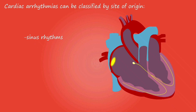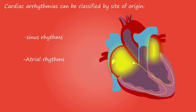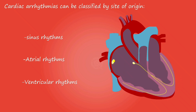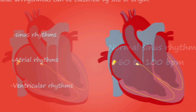A normal sinus rhythm means your heart rate is within a normal range. Atrial rhythm is an irregular, often rapid heart rate that commonly causes poor blood flow. Ventricular arrhythmias are abnormal heart rhythms that make the lower chambers of your heart twitch instead of pump.